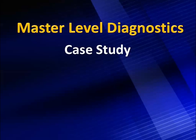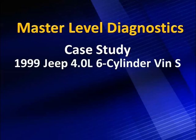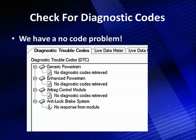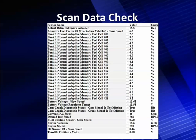Let's use a case study to understand exactly how we do this. The case study is fairly simple — it's a 1999 Jeep with a 6-cylinder engine that idles rough. We did the routine diagnostics, looked at trouble codes, found none present, did a detailed analysis of scan data including all the fuel memory cells, and could find nothing wrong. We're 15 to 20 minutes into diagnosing with no good diagnostic direction. Now is the time for advanced diagnostics.